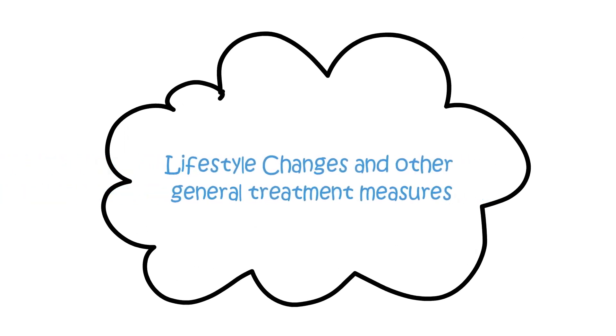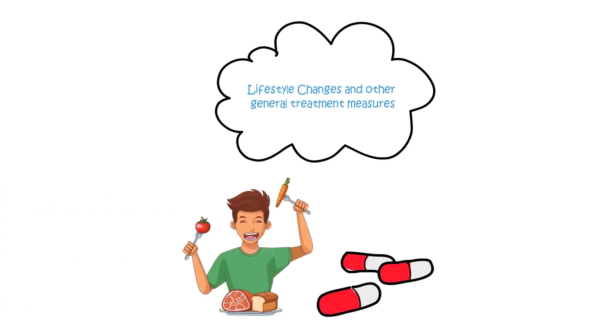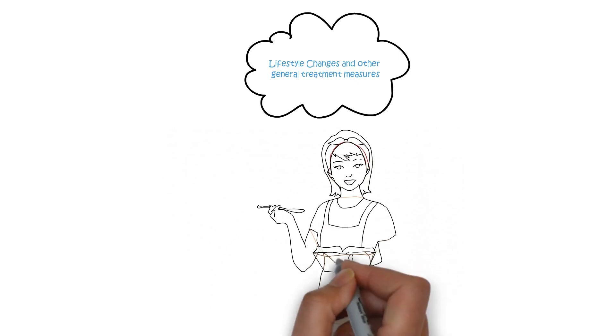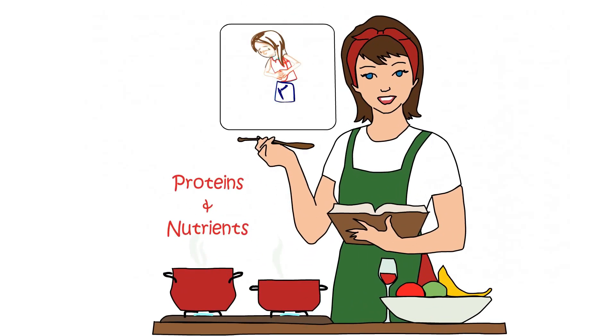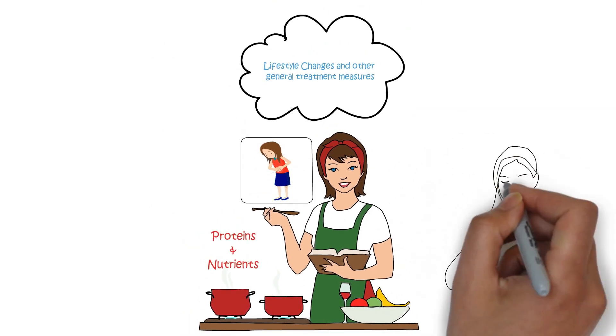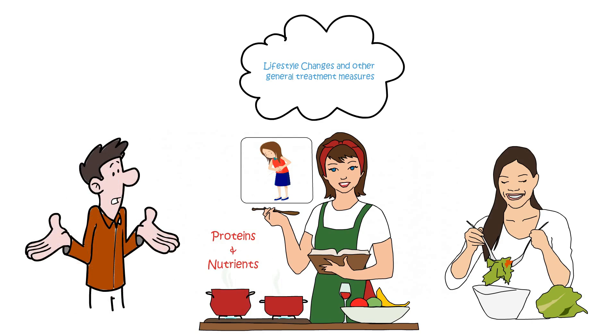Lifestyle Changes and Other General Treatment Measures. In addition to medication, lifestyle changes can also help manage the symptoms of Crohn's. A special liquid diet that contains proteins and nutrients may settle a flare-up within four weeks. A normal diet can be continued after this. No one knows for sure why this works.